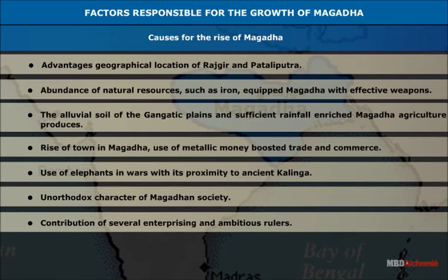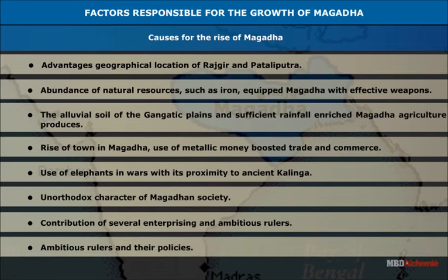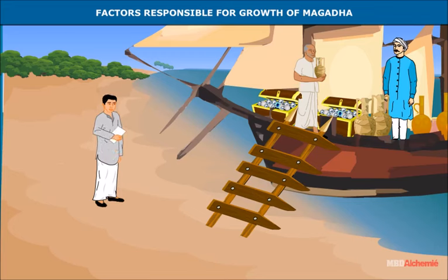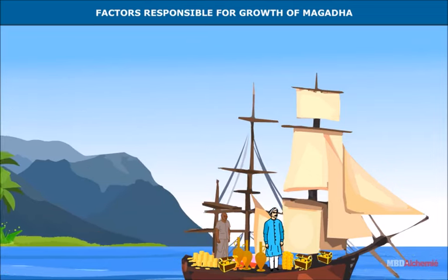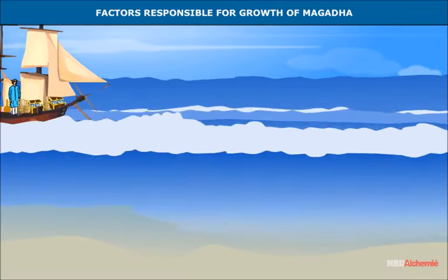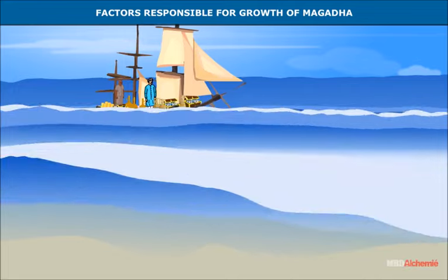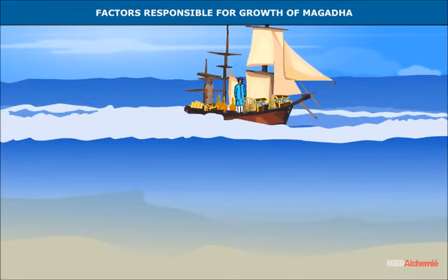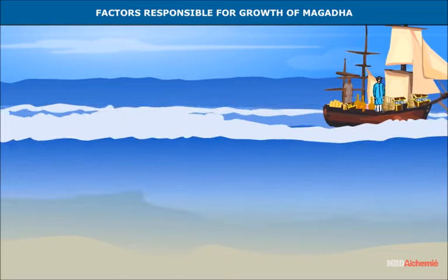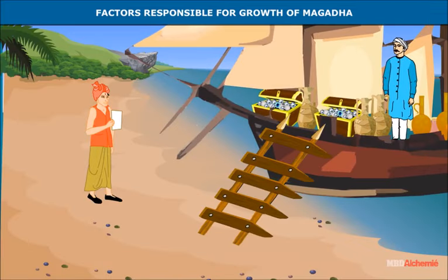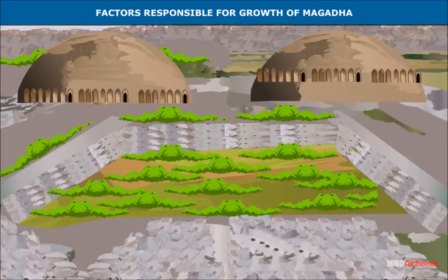Ambitious rulers and their policies also contributed. Trade ships could bring precious stones and spices from south India to Magadha. Trade from south India was carried on through the Bay of Bengal; the ships entered the port of Tamralipti at the mouth of the Ganga, where Kolkata is now located. Sailing up the mighty Ganga, these ships unloaded their costly cargo at Champa. This made Magadha very rich, and it also benefited from the rise of towns and the use of coins.